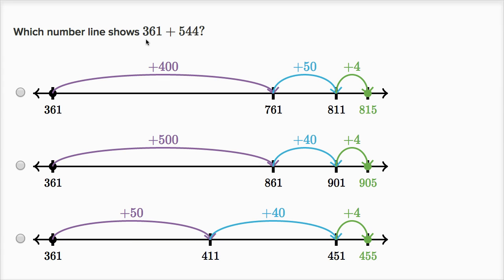Which number line shows 361 plus 544? So let's see, in all of them we're starting at 361. So now let's add 544.